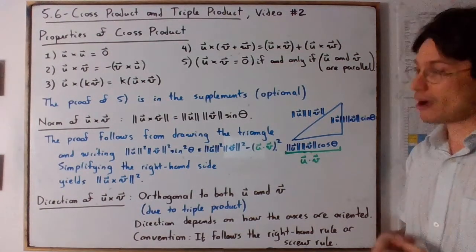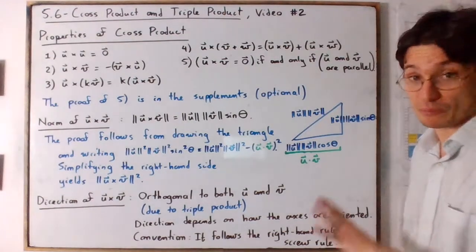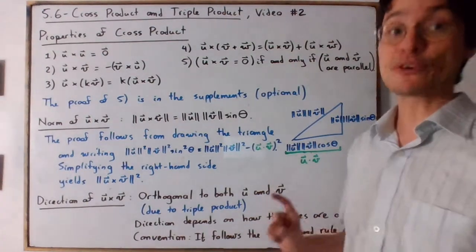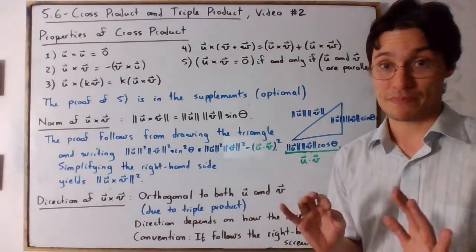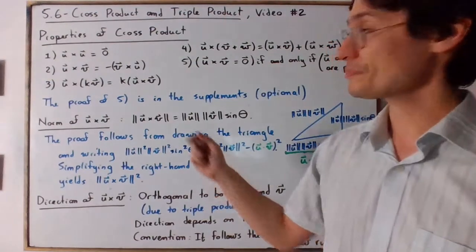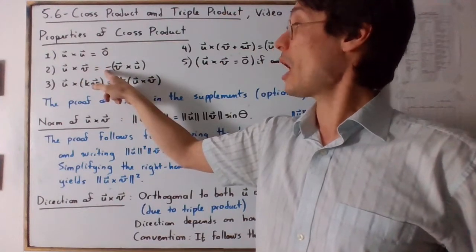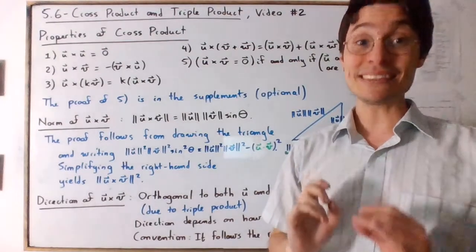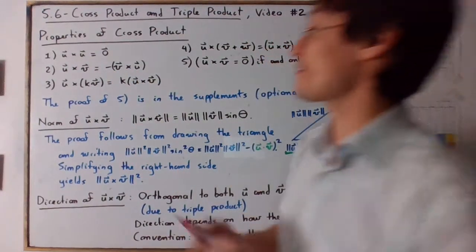Almost everything is on the board. Let's start at the top: properties of the cross product. If you cross product a vector with itself it's going to give the zero vector. Let's take the five properties and discuss them. Cross producting u and v is the opposite of cross producting v and u — this is called anti-commutativity. If you permute u and v it costs you a negative sign, so be careful about that.